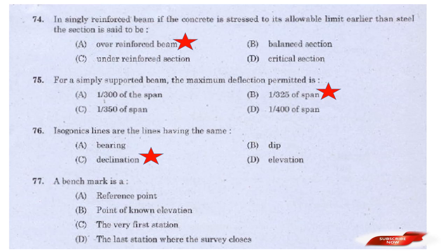Question: A benchmark is a — options: Reference point, Point of known elevation, The very first station, The last station where the survey closes. Answer: Option B — Point of known elevation. A benchmark is a point of known elevation.